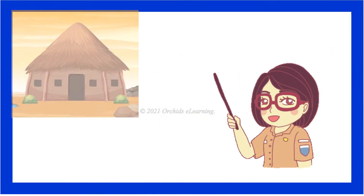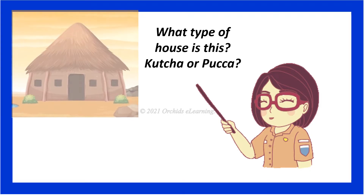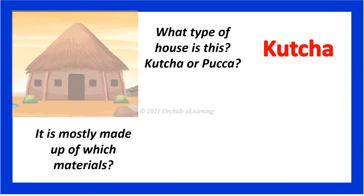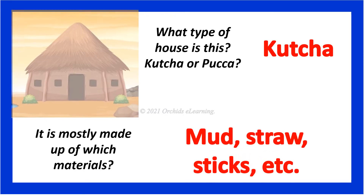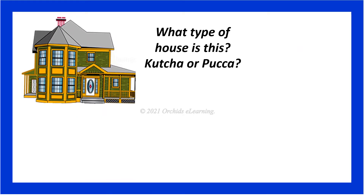Children, you have already learned the lesson on housing and clothing in the previous class. Let us recapitulate it. Tell me, what type of house is this — kuccha or pucca? It is made up of which materials — mud, straw, sticks, etc. What type of house is this — kuccha or pucca?